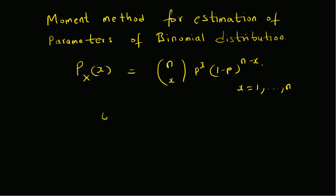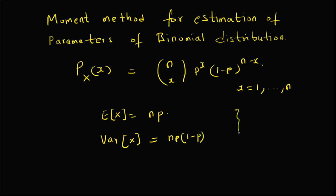For this binomial distribution, recall from theory that the mean value, that is the expectation of x, is given by n times p, and the variance of x is given by n*p*(1-p).